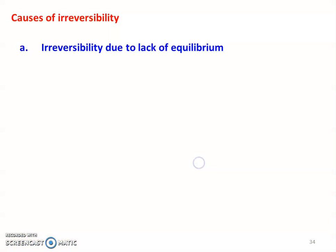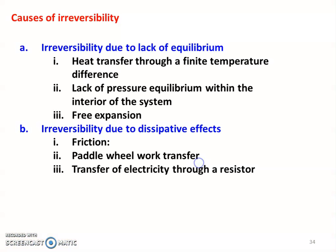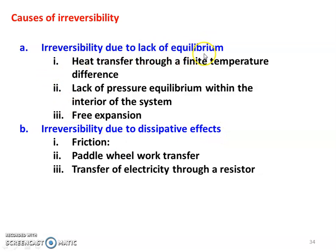First, causes of irreversibility. There are two major classifications. One is irreversibility due to lack of equilibrium, and one is irreversibility due to dissipative effect. Lack of equilibrium will make the process irreversible, and dissipative effect will also make the process irreversible.